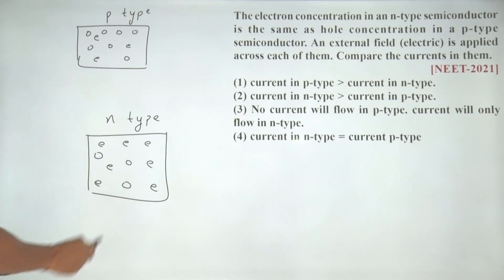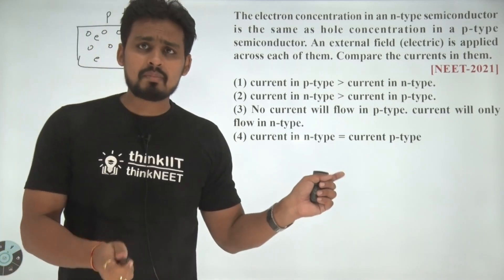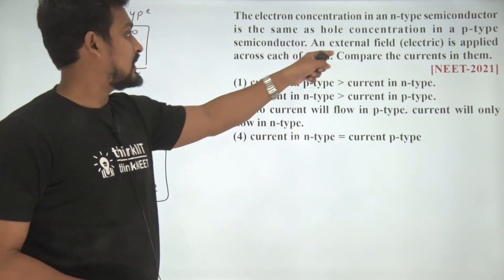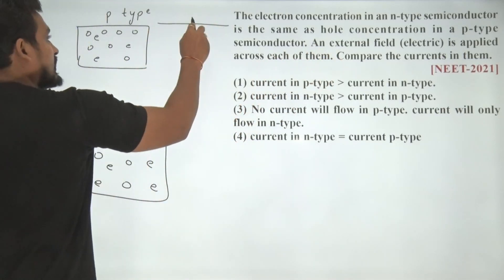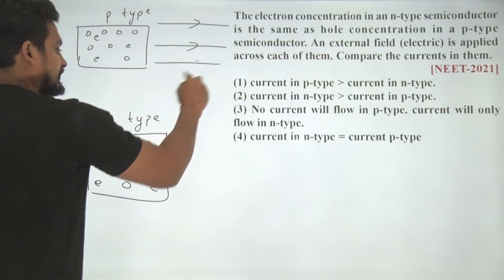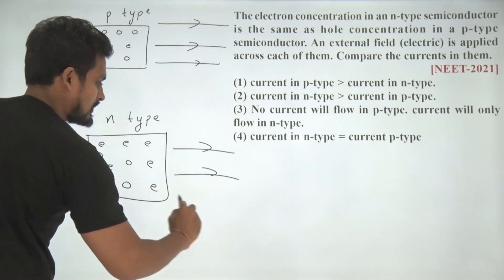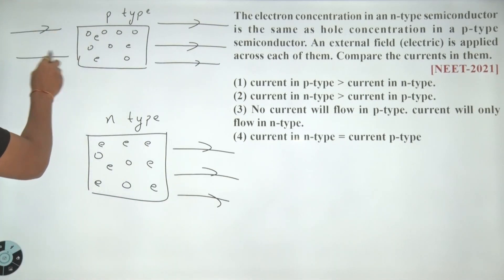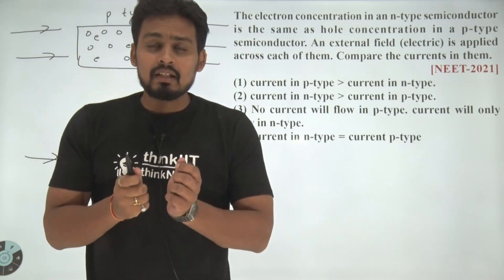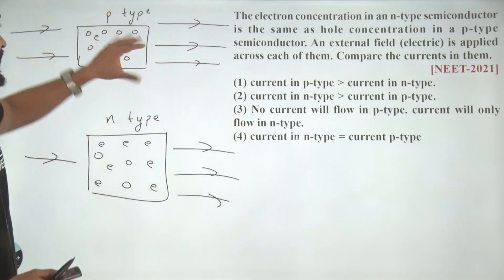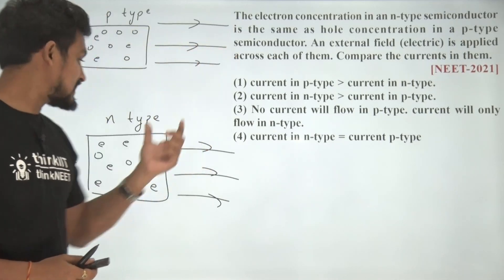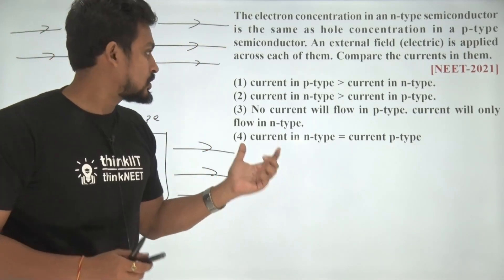Now, both of these are placed in the external electric field. If external electric field is being applied across both of them, what would happen? The electrons would experience some force in both of these, but in this case we have less electrons and in this case we have more electrons.